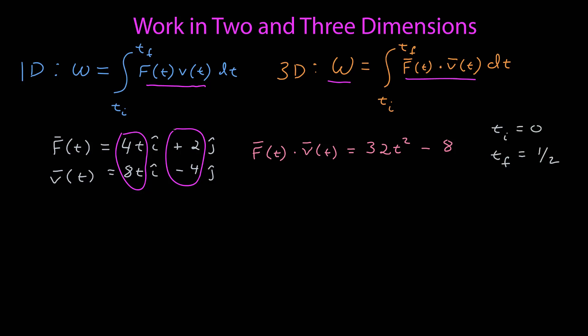Let's say from t equals 0 to t equals 1/2. Now I have that integral, which is just a simple polynomial. The antiderivative is 32t cubed over 3 minus 8t, evaluated between 0 and 1/2, gives me 4/3. t cubed of 1/2 should be 1/8, minus 4 equals negative 8/3 joules. Typically this isn't the sort of thing you can have, but we can see how this might work.